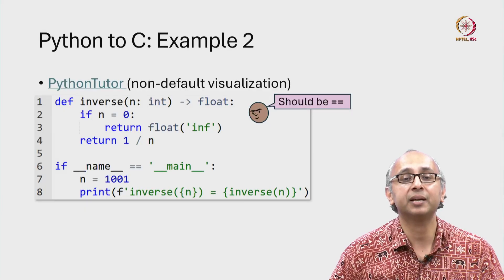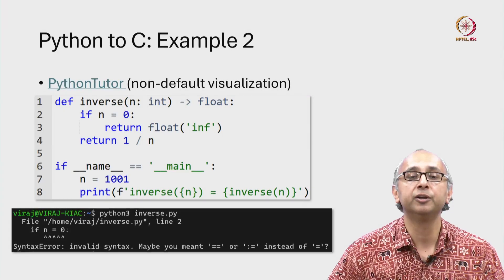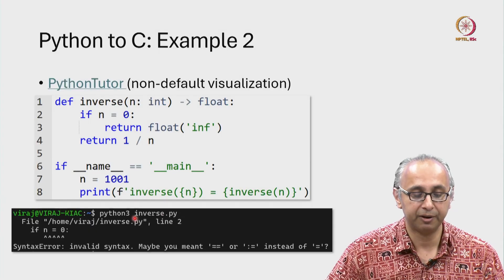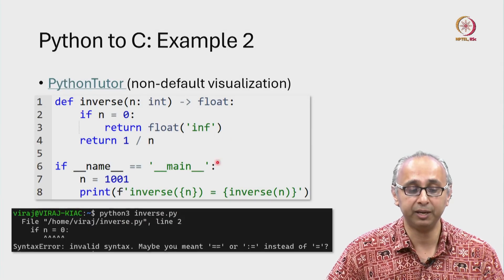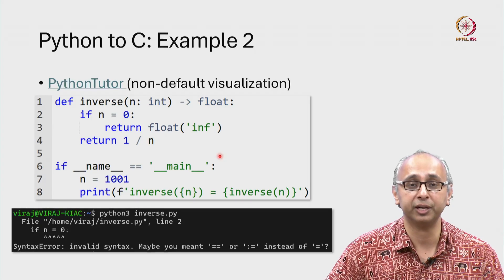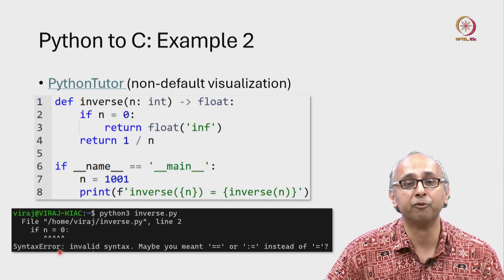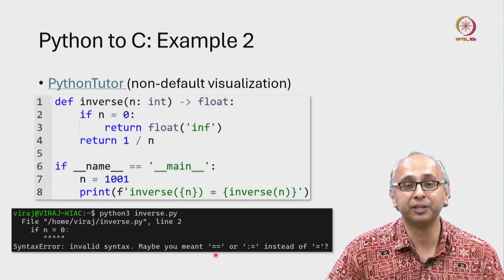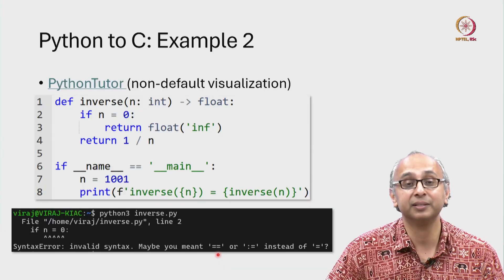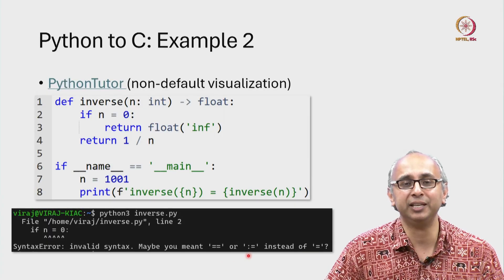Now we get the same kind of syntax error if we try to run the interpreter from the command line. Here I am running my interpreter. I say python3 inverse.py if I have saved this as a file called inverse.py and once again I will get the same type of error message. My interpreter is warning me that perhaps instead of single equal I meant double equal or this other operator colon equal.